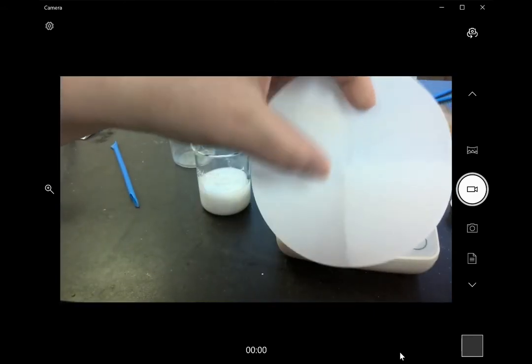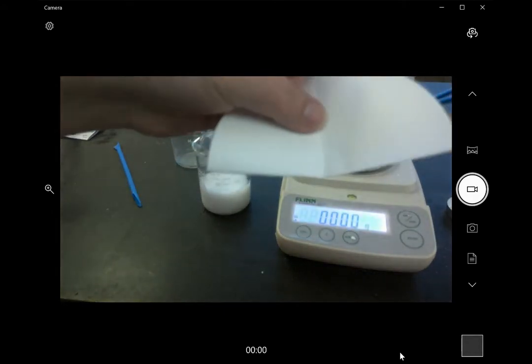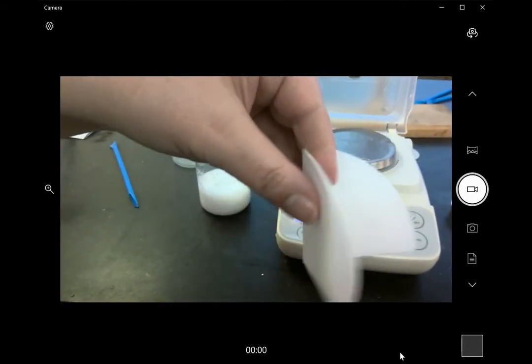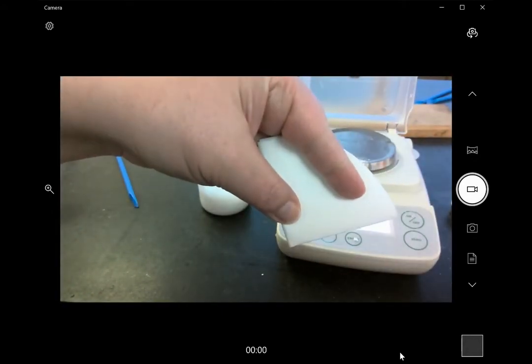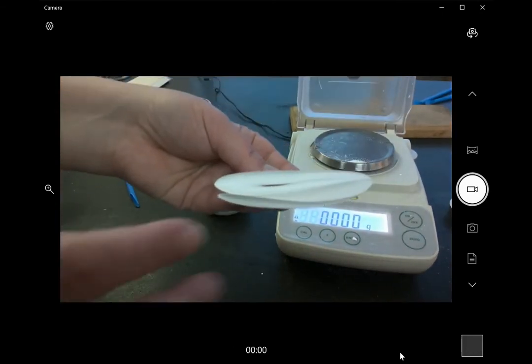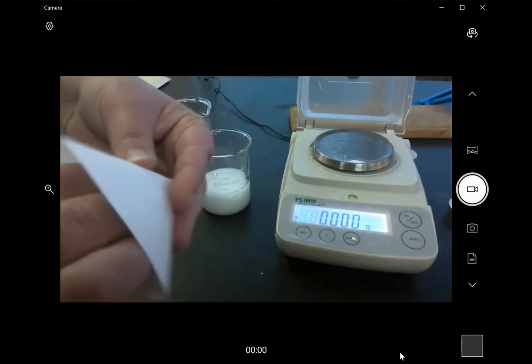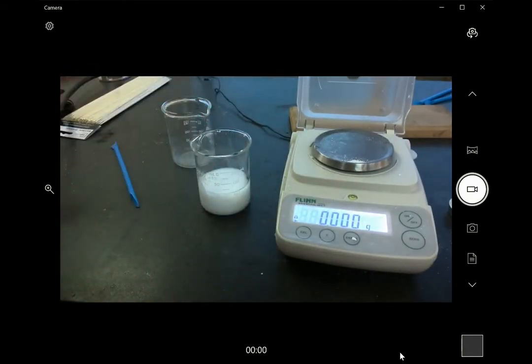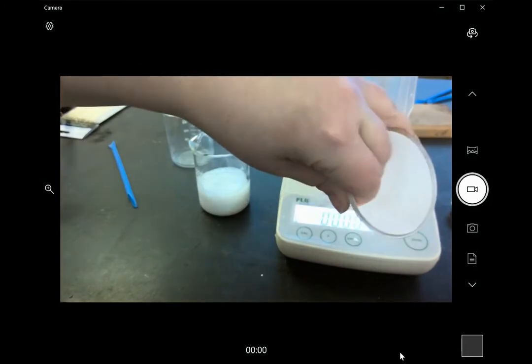I'm going to fold my filter paper in half and then in half again so that I get this funnel shape. And when I open it up to put it in my funnel, I'm going to make sure I have three layers on one side, one layer on the other side, so that it fits into my funnel like this.